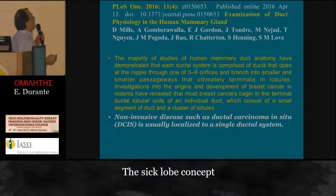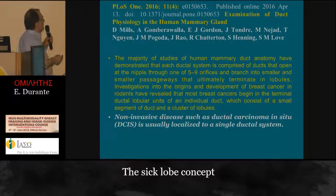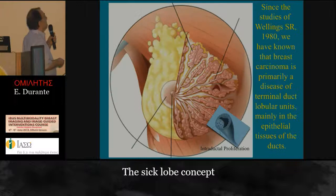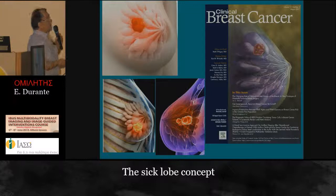The majority of studies of human mammary duct anatomy have demonstrated that each ductal system is comprised of ducts that open at the nipple through one of five to nine orifices and branch into smaller and smaller units. Investigations into the regional development of breast cancer have revealed that most breast cancers begin in the terminal ductal lobular units of an individual duct, which consists of a small segment of ducts and a cluster of lobules. Non-invasive diseases such as ductal carcinoma in situ are usually localized within a single ductal system. Since the start of Wellings' work in 1980, we have known that breast carcinoma is primarily a disease of terminal ductal lobular units in the epithelial tissue of the duct. The carcinoma arises from the epithelial cells of the duct.